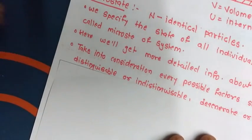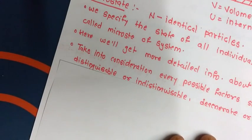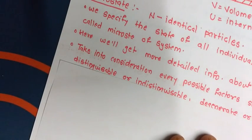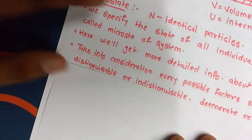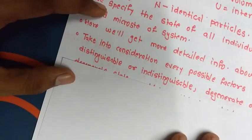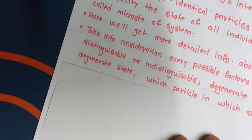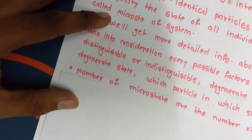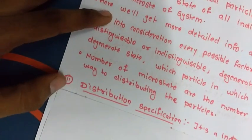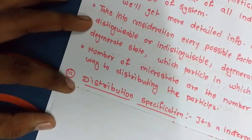In microstate, the system takes every possible factor into account — for example, whether the particles are distinguishable or not distinguishable, whether the states are degenerate or non-degenerate, and which particles are in which state.